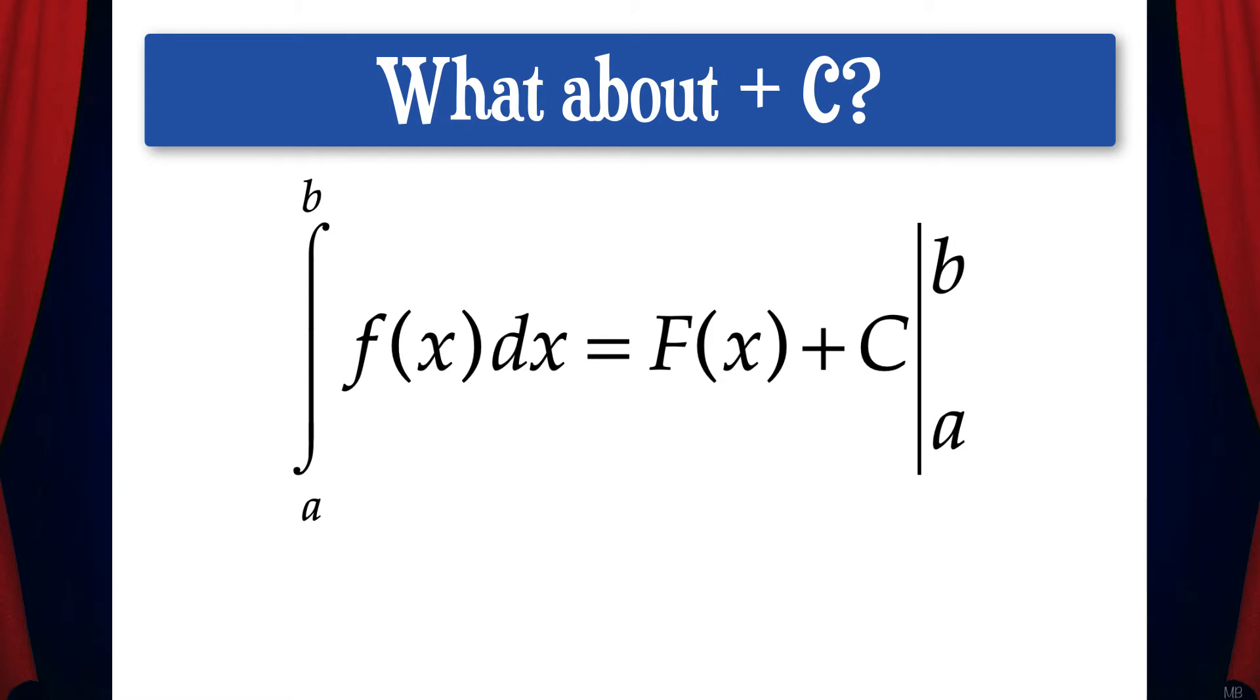And just a side note about the notation here, this vertical line with the a to b means that we're going to evaluate the antiderivative function using the fundamental theorem of calculus. And that gives us capital F of b plus c minus the quantity of capital F of a plus c. And the c's cancel out, so we're left with capital F of b minus capital F of a.